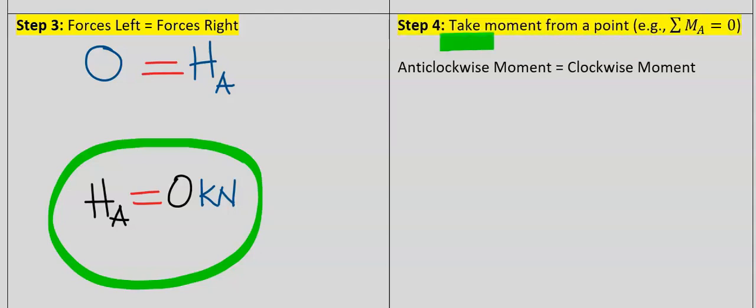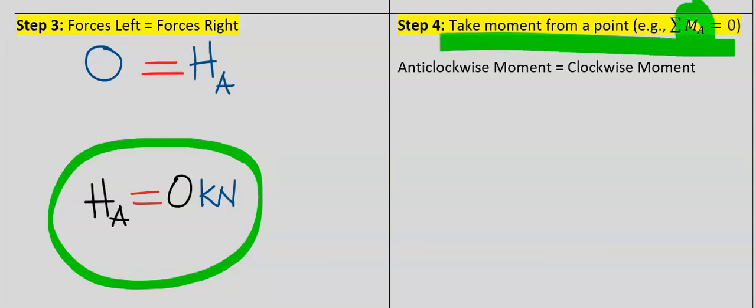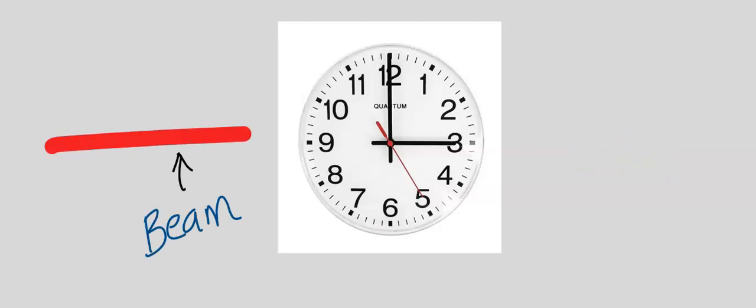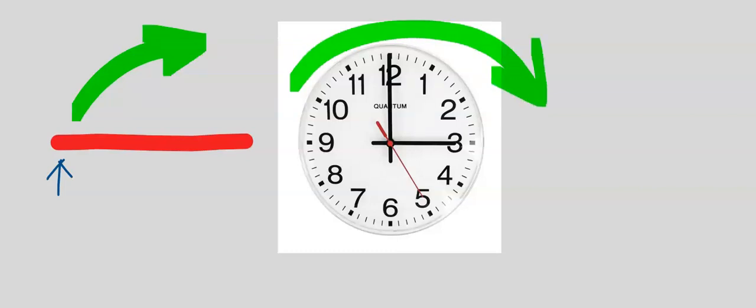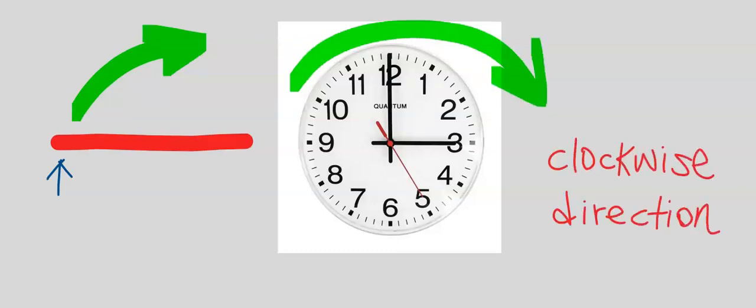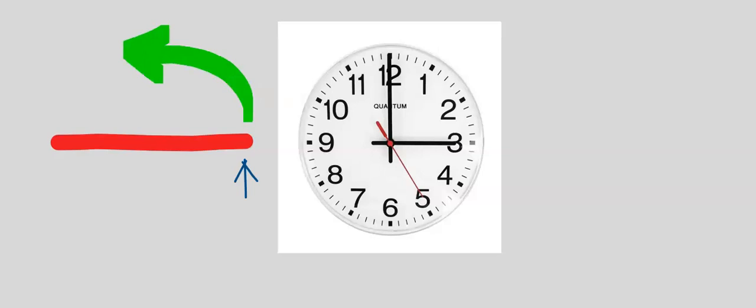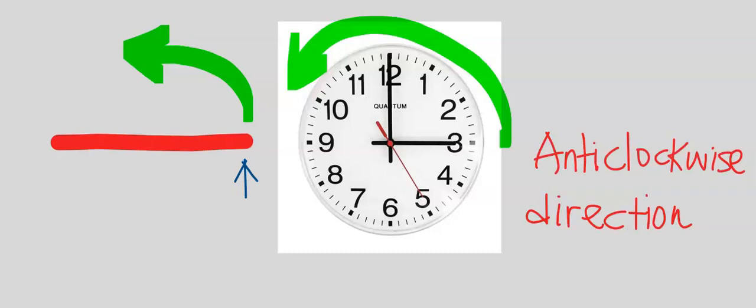Step number four: we're going to take moments about point A. Let's recap the clock convention. Any force that pushes the beam to turn in the same direction as a clock will be the clockwise direction. If the beam is pushed by a force and moves in the opposite direction to the clock, we say the beam is moving in the anticlockwise direction.